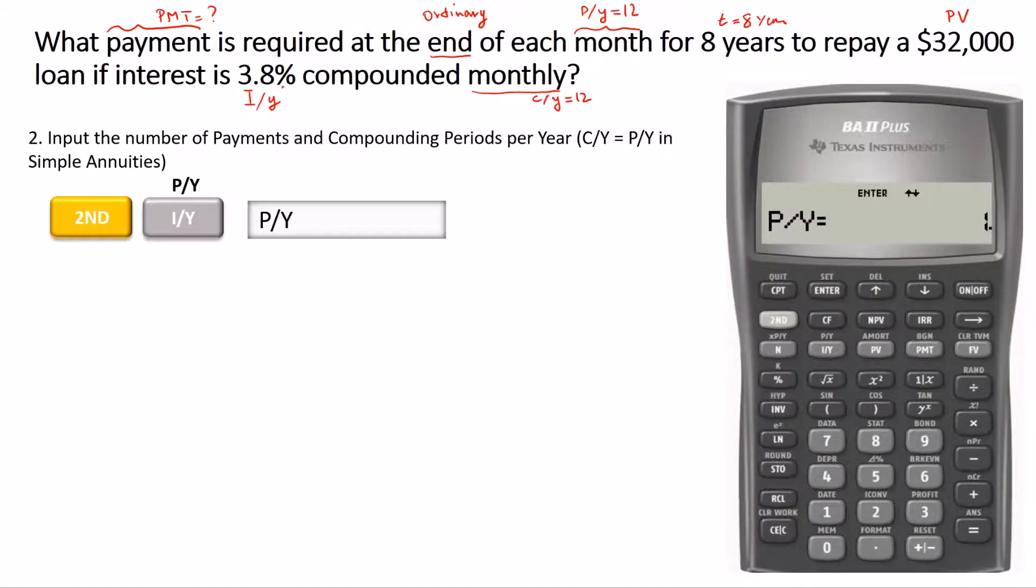For simple annuities, P/Y and C/Y are equal. Every time you change P/Y, C/Y is automatically saved to the same number. For example, in this case, if I change the number of payments to 12 and press Enter, 12 is stored to P/Y. Then if I double-check the number of compounding periods, C/Y has changed to 12 as well.